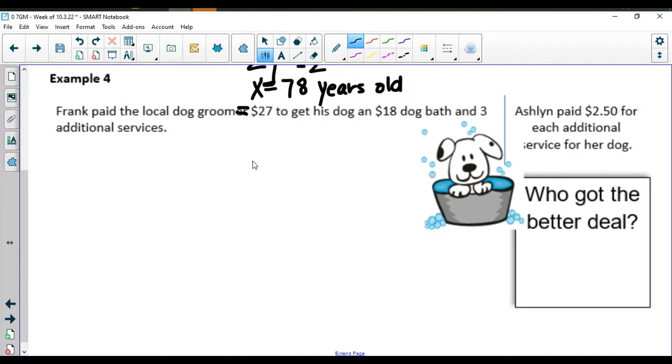Frank paid $27. That's his total which signals an equals number to me. The $18 dog bath he pays for tells me that we're adding three services but we don't know the cost of a service.